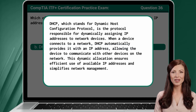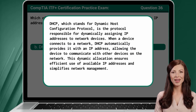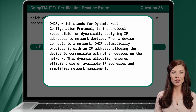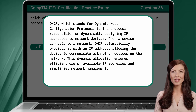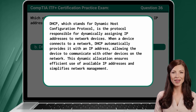DHCP, which stands for Dynamic Host Configuration Protocol, is the protocol responsible for dynamically assigning IP addresses to network devices. When a device connects to a network, DHCP automatically provides it with an IP address, allowing the device to communicate with other devices on the network. This dynamic allocation ensures efficient use of available IP addresses and simplifies network management.